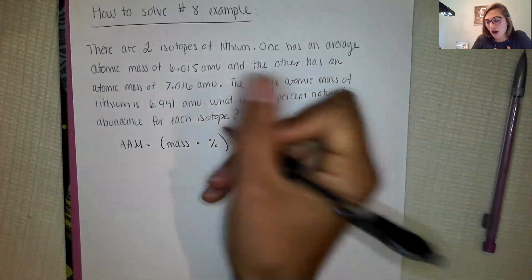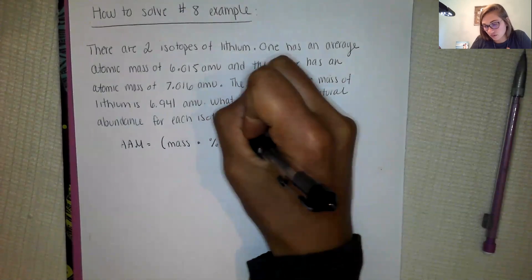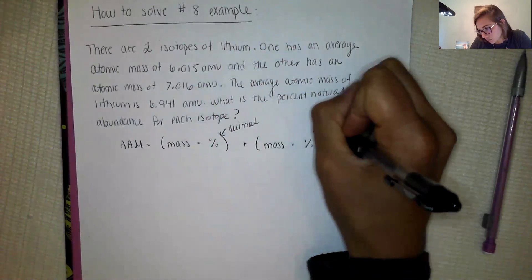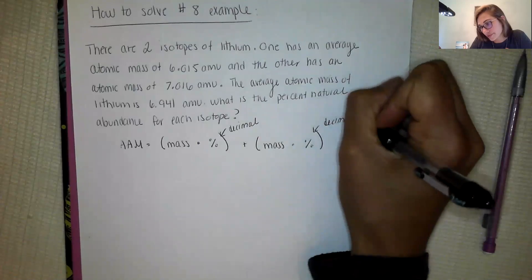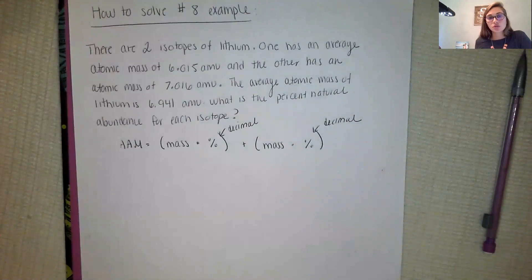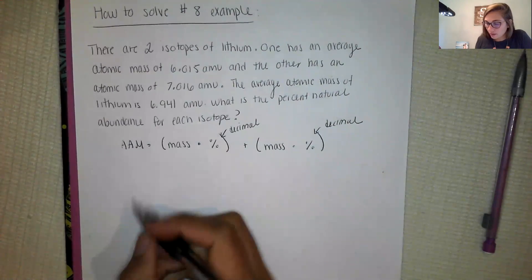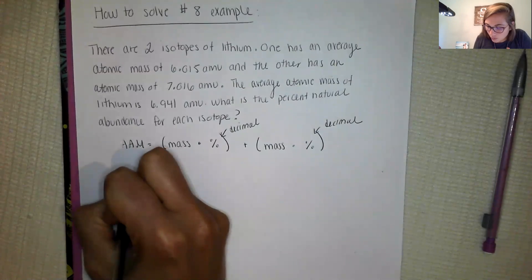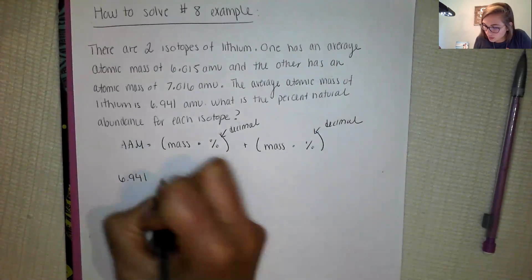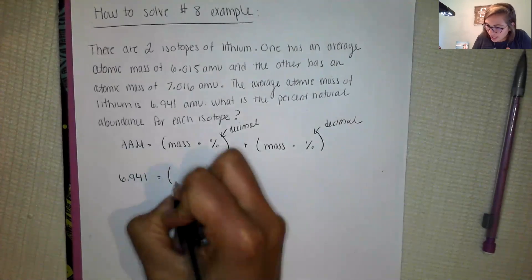Whenever I do these problems I always convert these into decimal form. I prefer to work with smaller numbers than larger numbers. So I know my average atomic mass and that is 6.941 and I know the mass of each of my isotopes.